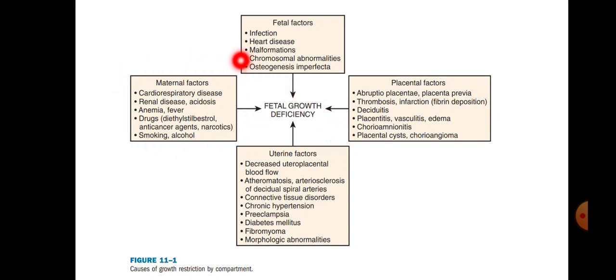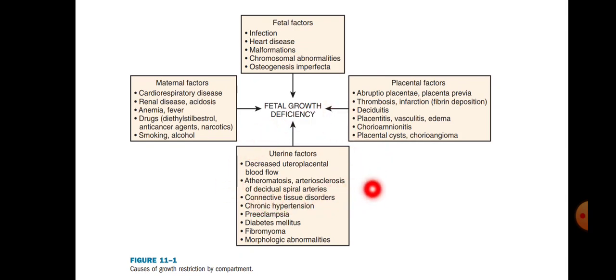Maternal conditions such as cardiorespiratory diseases, renal diseases, drugs, smoking, and alcohol cause some amount of uteroplacental insufficiency and chronic hypoxia by not allowing adequate transfer of substrates to the fetus.